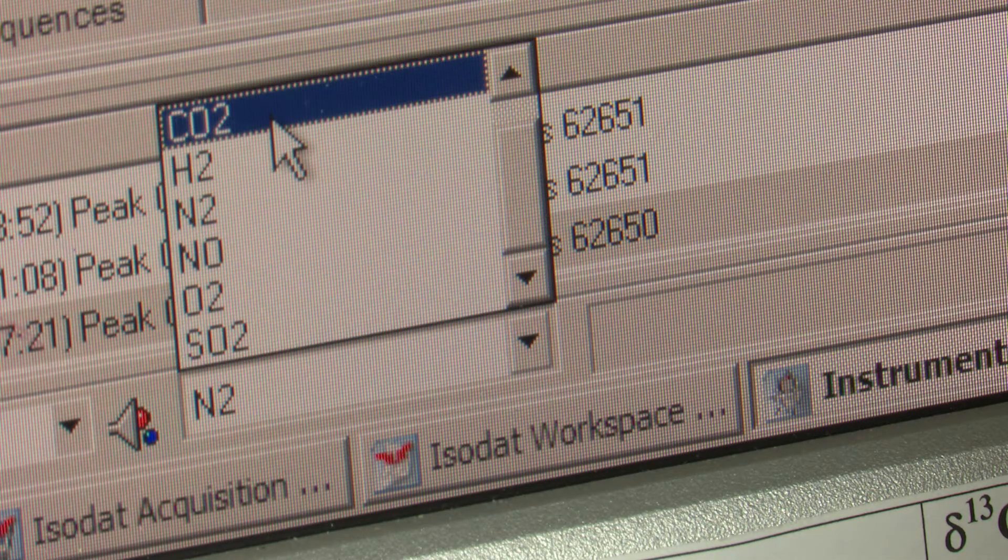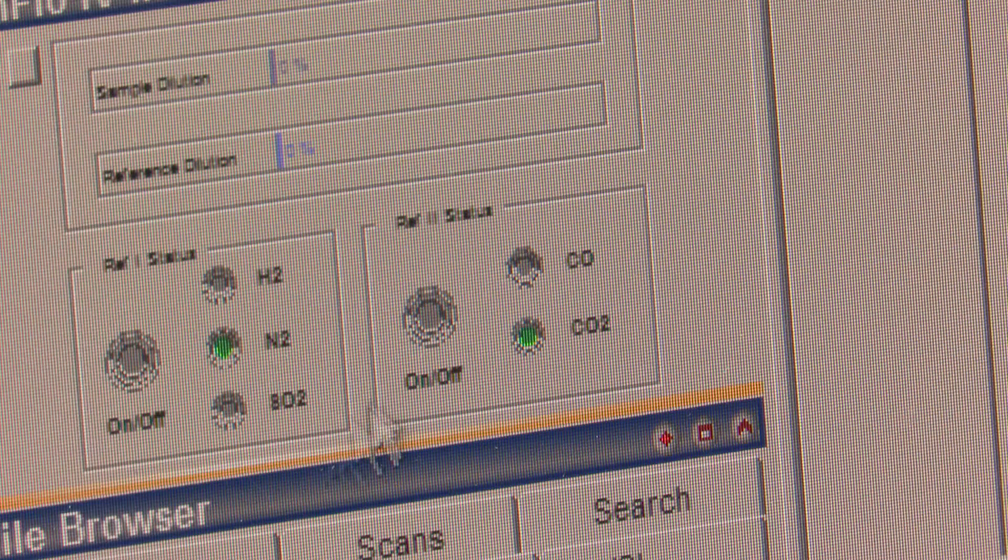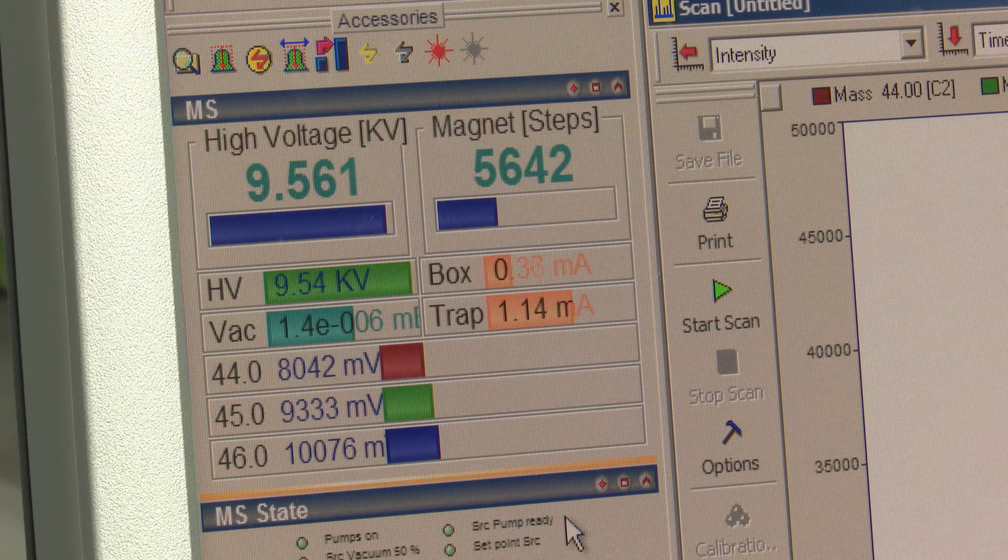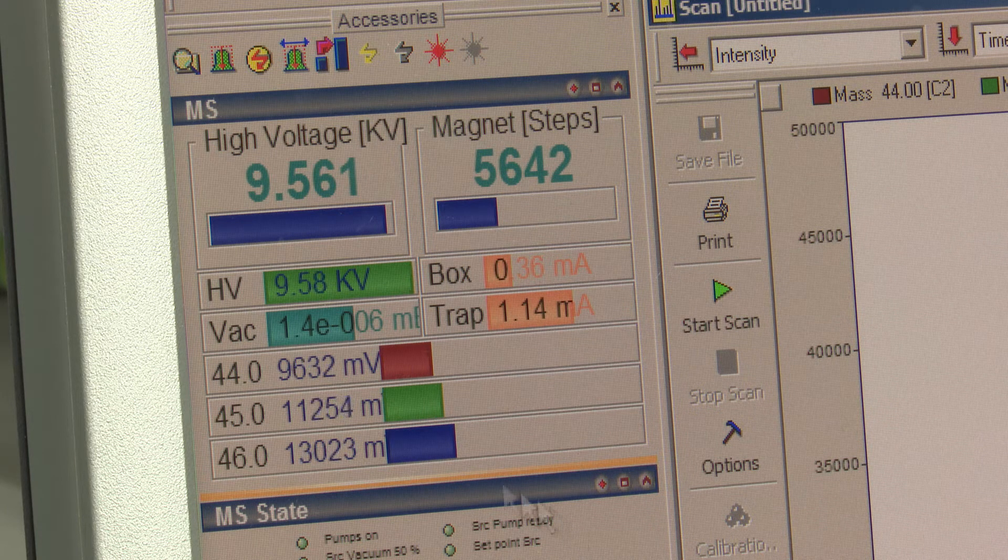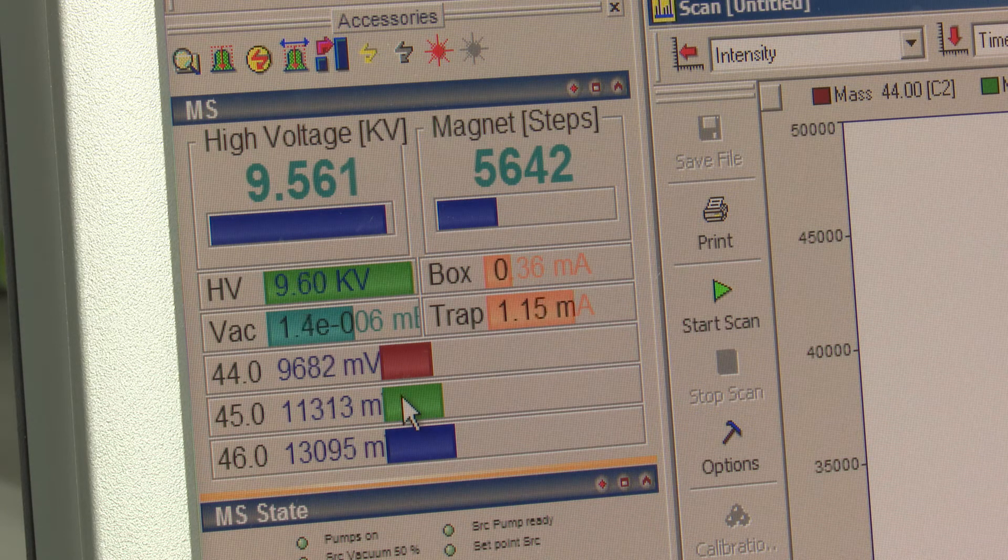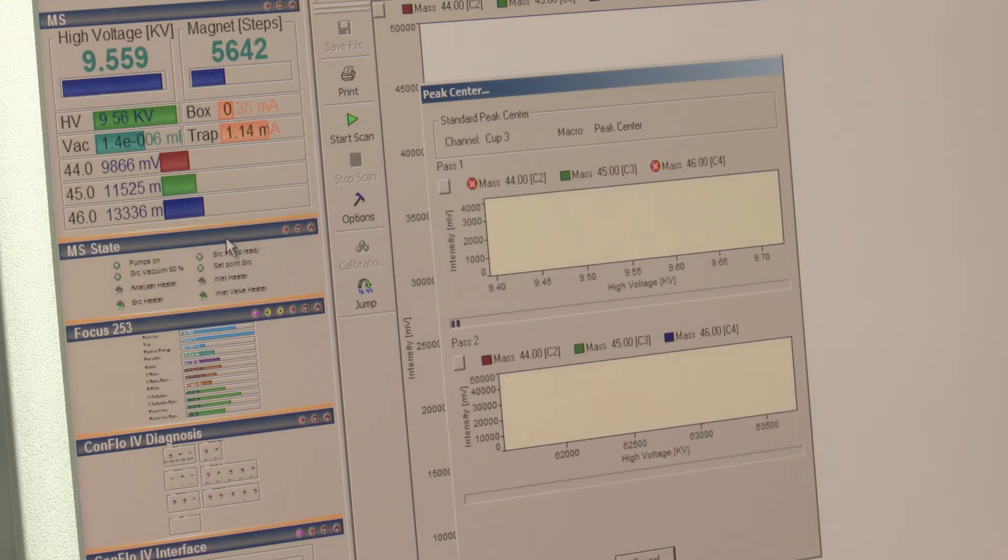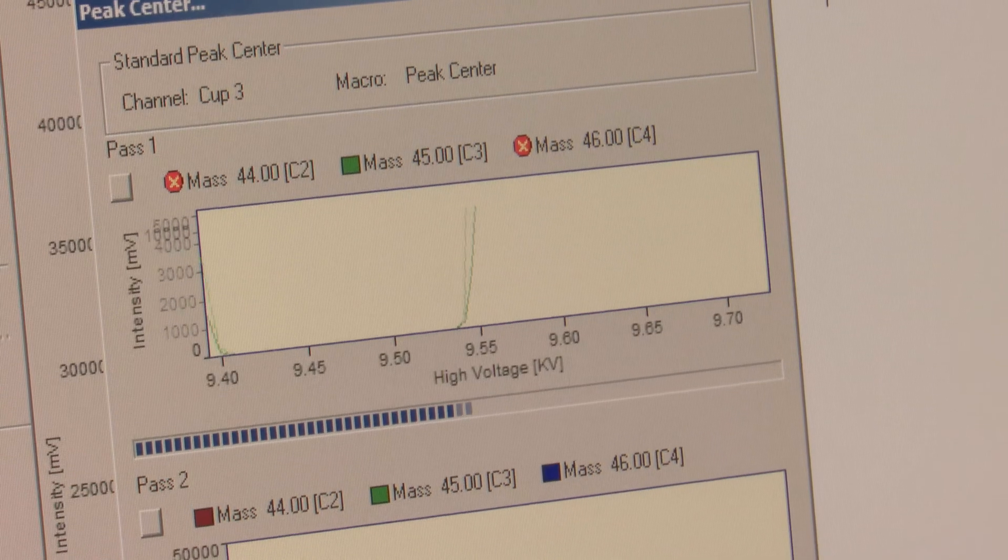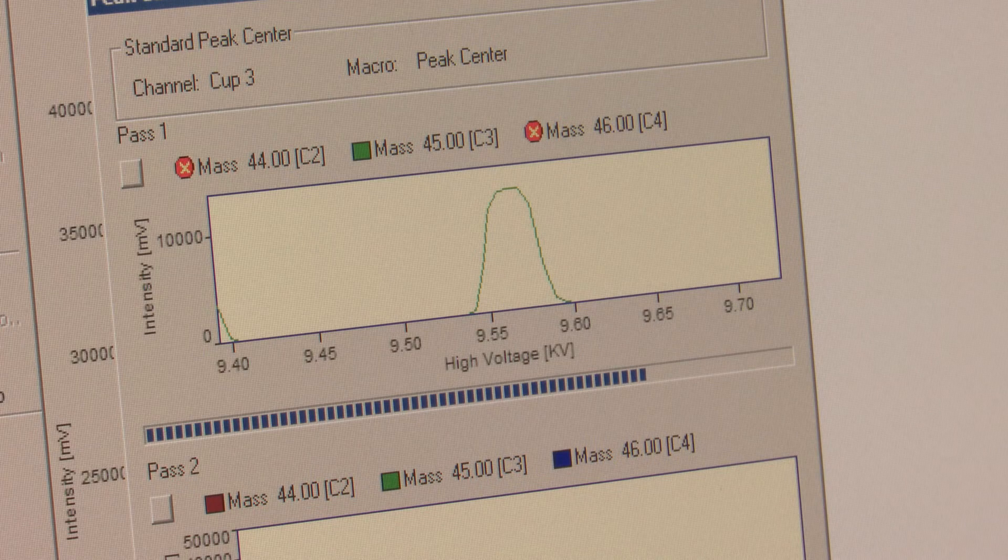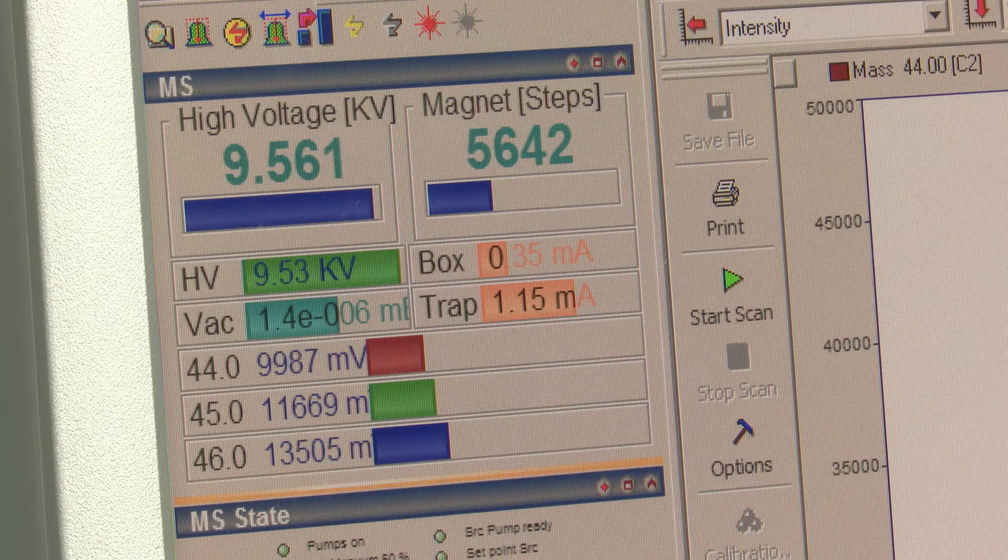When it comes to making the actual analysis, the procedure is very similar to conventional gas chromatography. The difference being that prior to entering the gas mass spectrometer, the compounds eluting from the gas chromatographic column are combusted to carbon dioxide and water. The water is then removed prior to the pure CO2 entering the mass spectrometer.